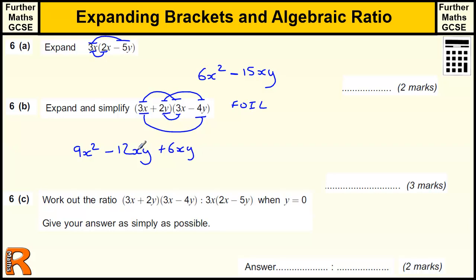If I wrote yx there, I might not spot that those two can be added together later on. So if you do it as you write it down, you should be fine. And we've got 2 times minus 4 is minus 8, and we've got y squared. So we've got 9x squared, minus 12xy plus 6xy is minus 6xy, and minus 8y squared.